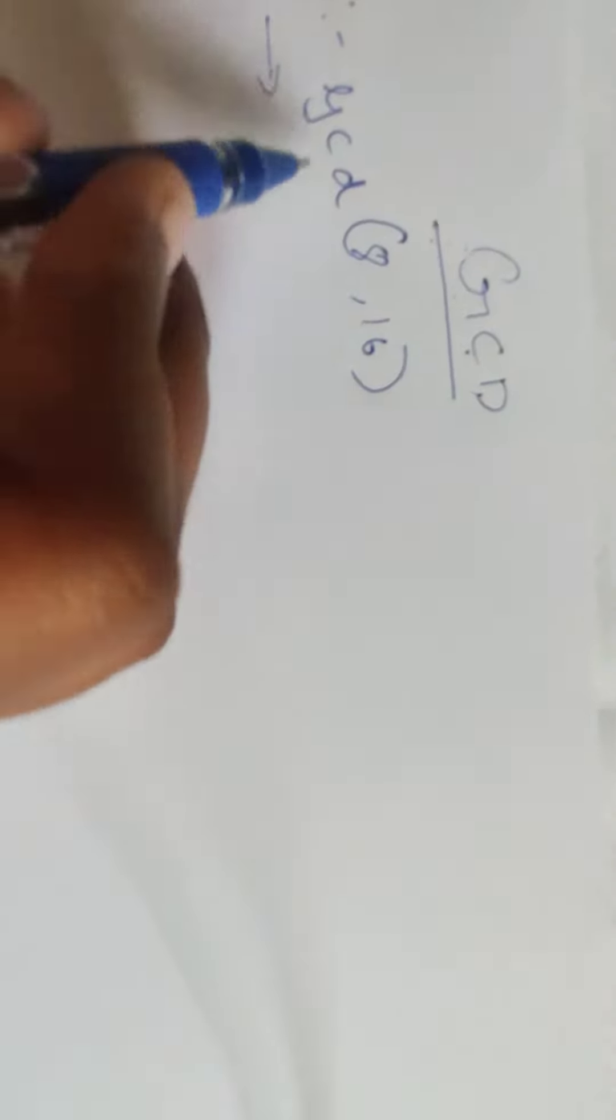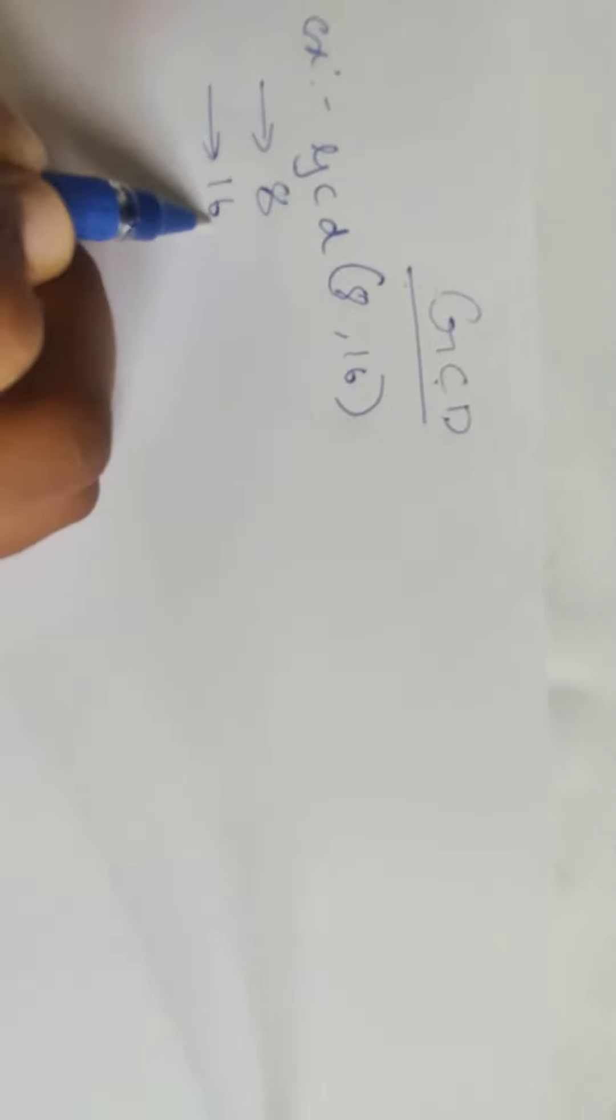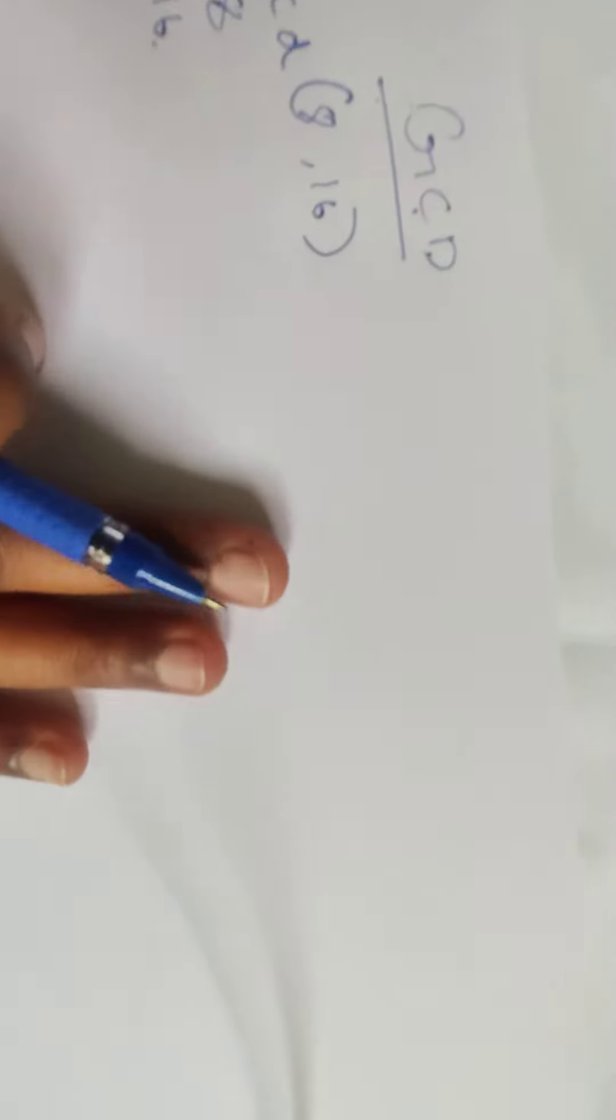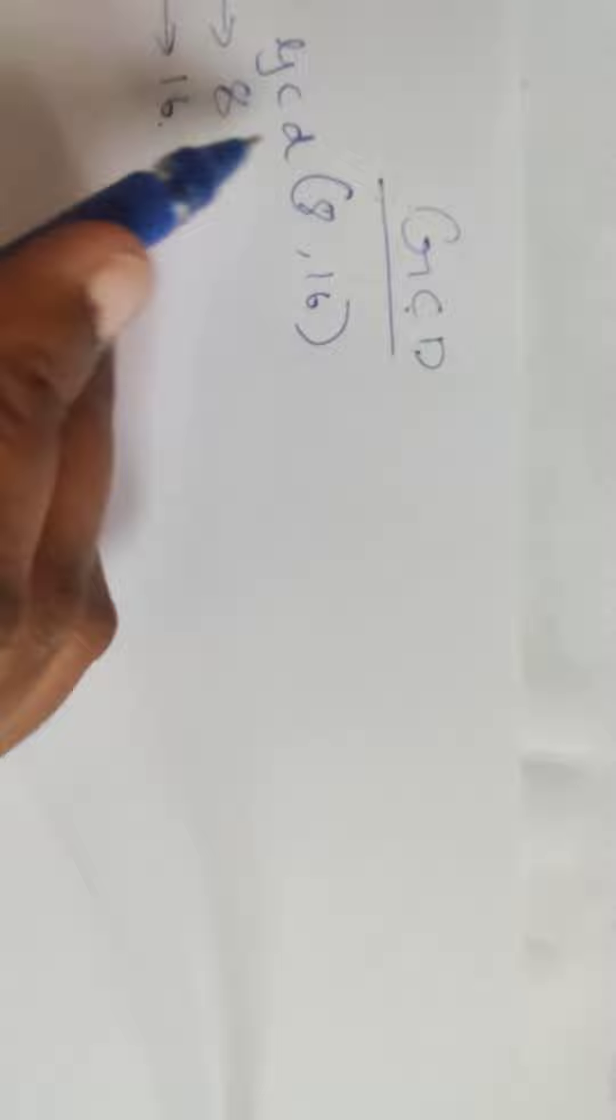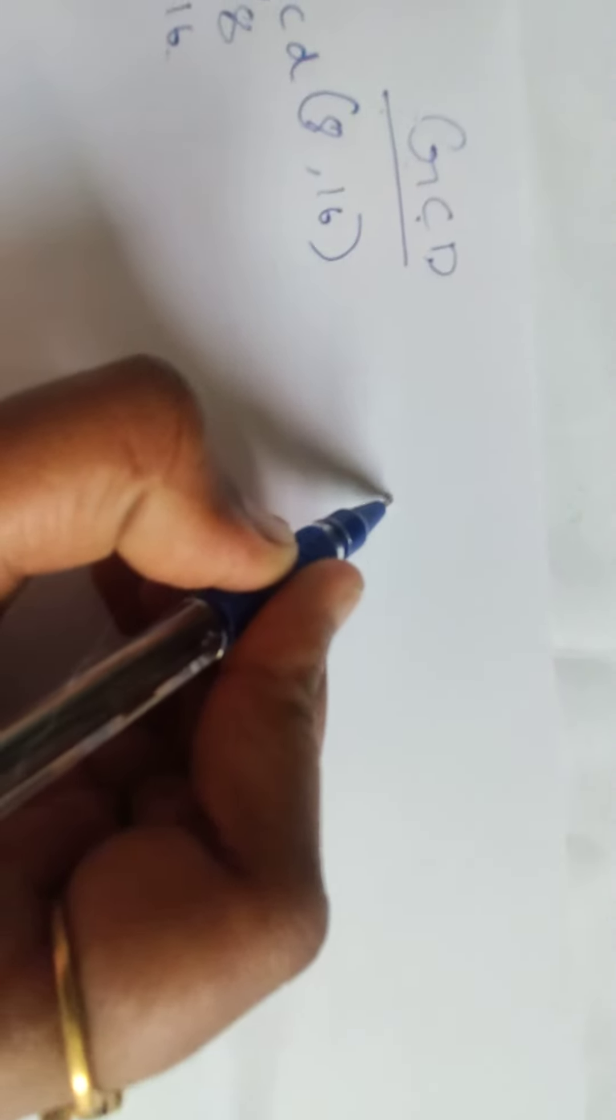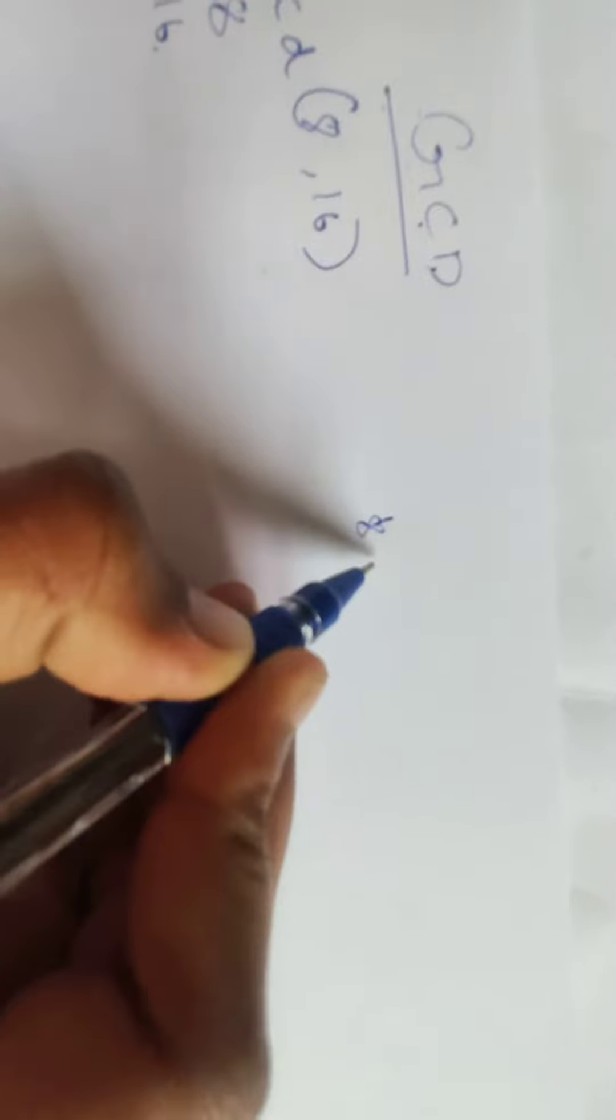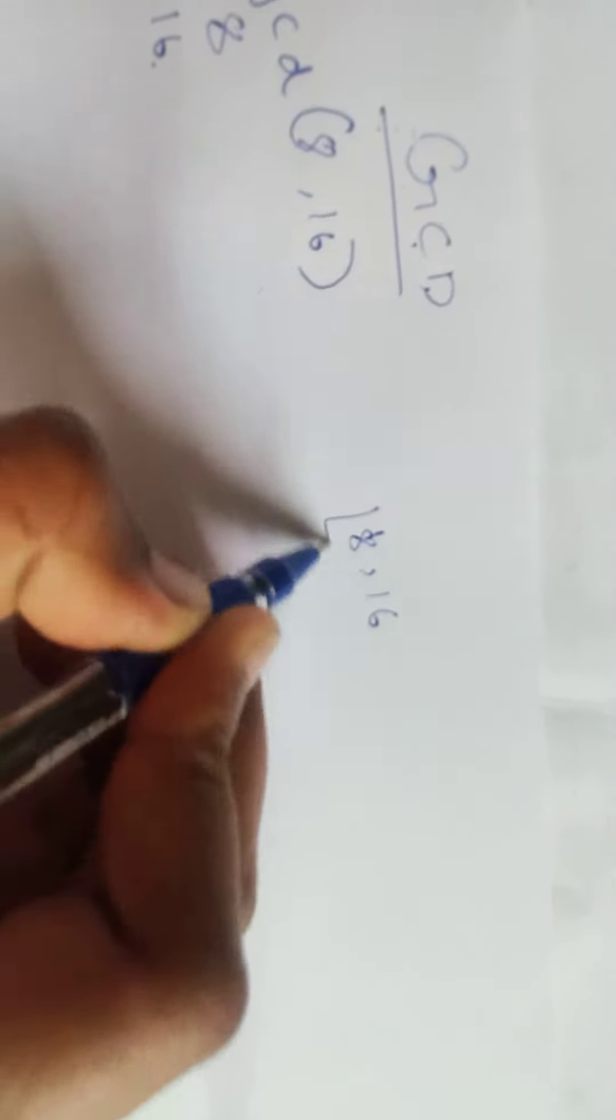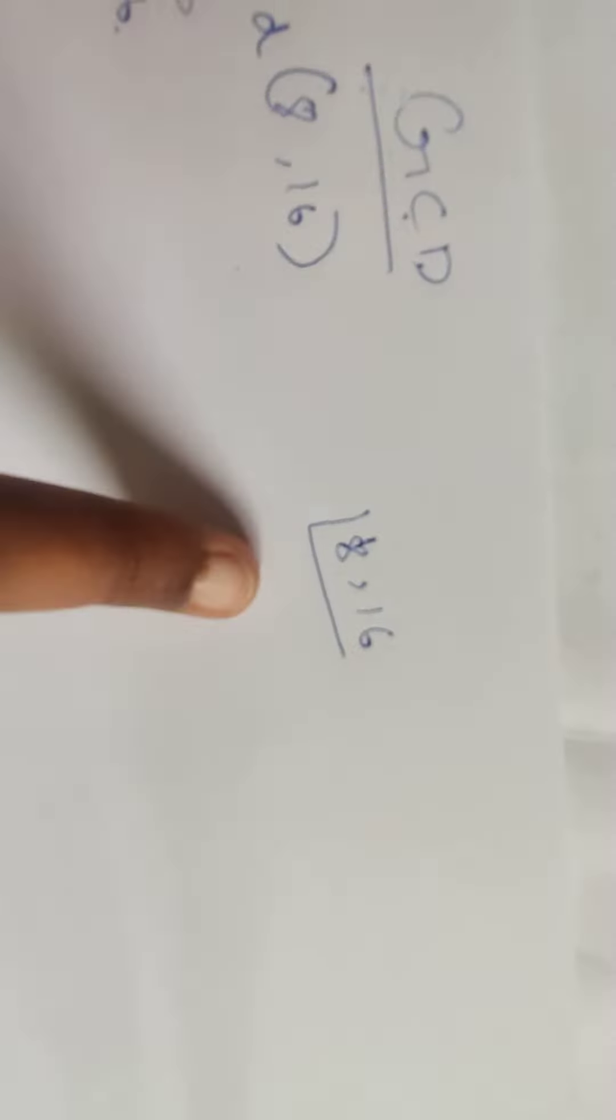I'll give you a simple method to find factors for 8 and 16. It's very simple - just write 8 comma 16, the way you take the highest common factors.